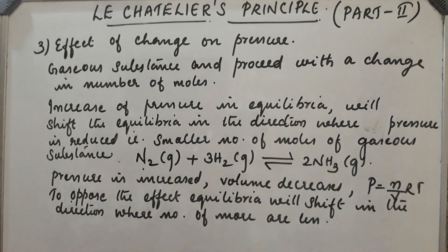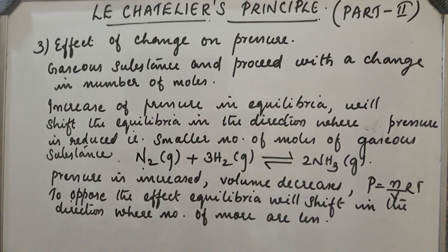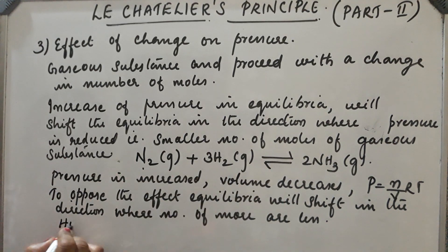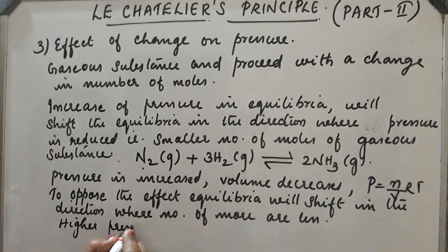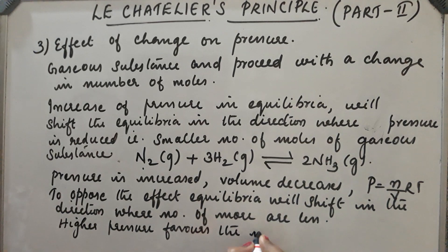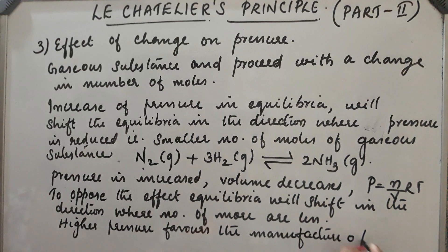So we can say in the manufacture of ammonia, higher pressure favors the manufacture of ammonia, because the forward reaction is favored.